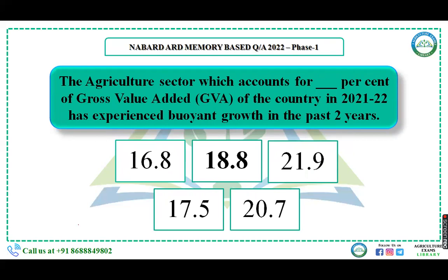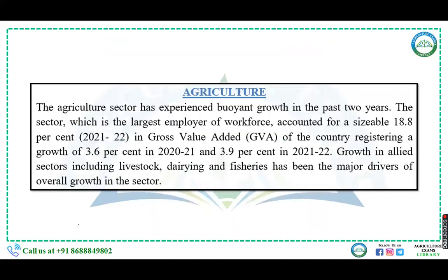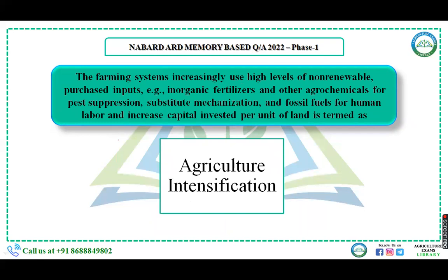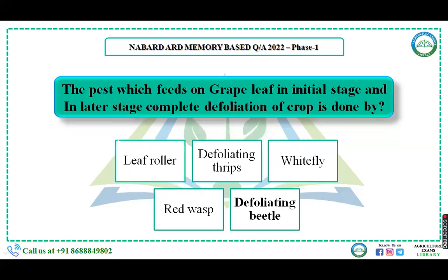The agriculture sector accounts for dash percent of the GVA of the country in 2021-22 — the answer is 18.8 percent. The farming system that increasingly uses high levels of non-renewable purchased inputs, organic fertilizers, and other agrochemicals for pest suppression, substitutes mechanization and fossil fuels for human labor, and increases capital investment priority of land — that is known as agriculture intensification.